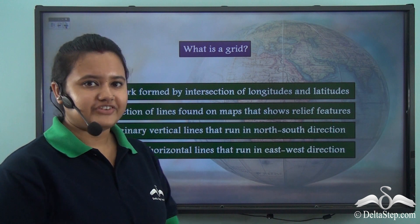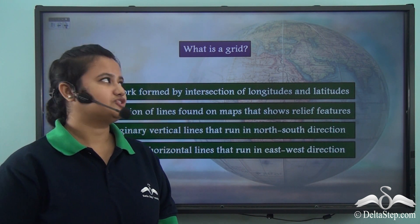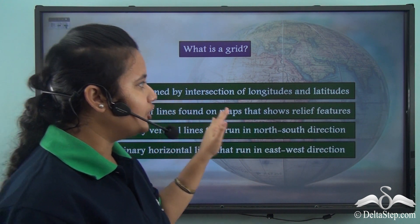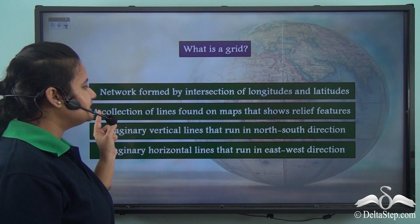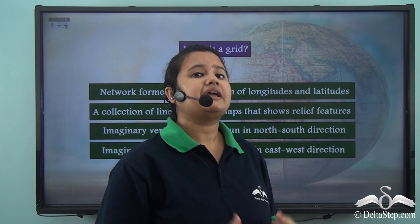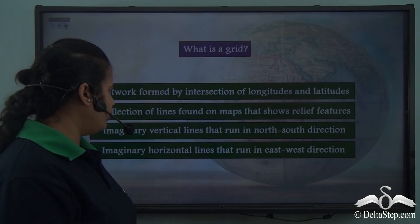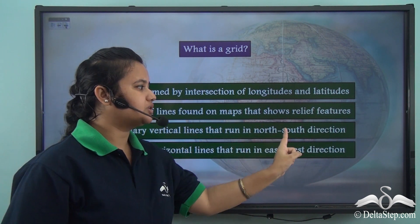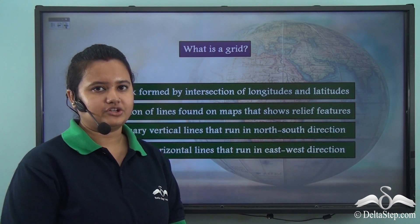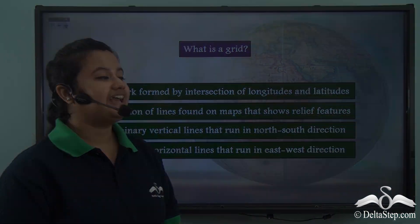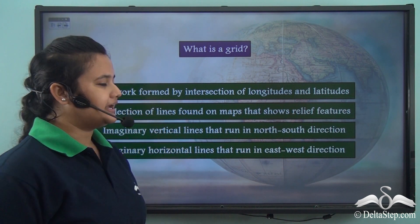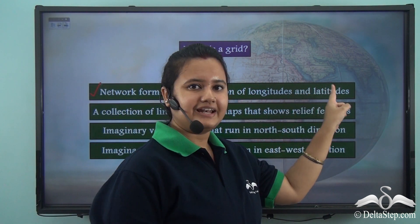Now let's answer this question: What is a grid? Is it a network formed by the intersection of longitudes and latitudes? Is it a collection of lines found on maps that shows relief features like mountains and valleys? Or imaginary vertical lines running north-south? Or imaginary horizontal lines running east-west? The correct answer is: a grid is a network formed by the intersection of longitudes and latitudes.